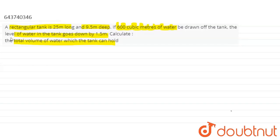So in this question, we are given a rectangular tank in which we are given length as 25 meters, height as 9.5 meters, but we are not given the width. So let us say width is W here, and length is 25 and height is 9.5 meters.